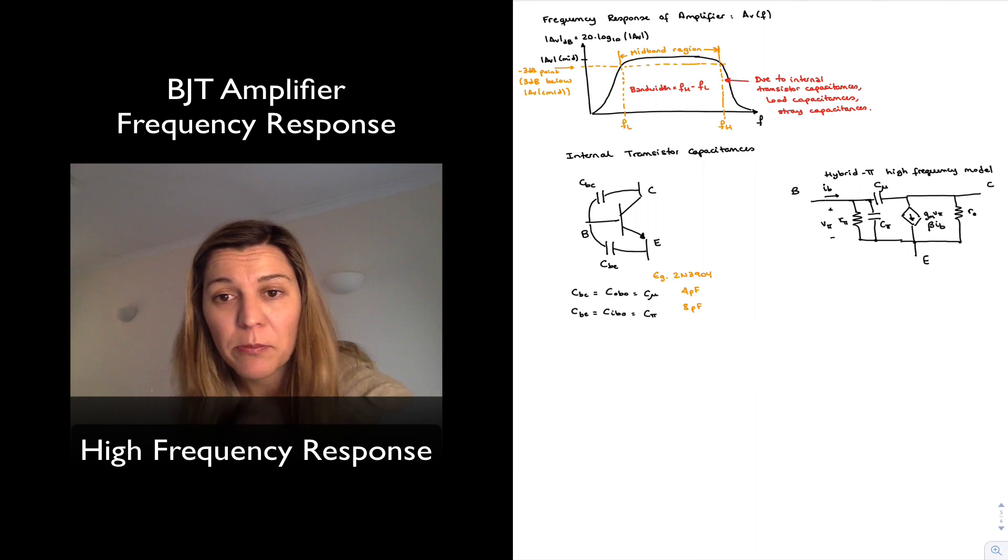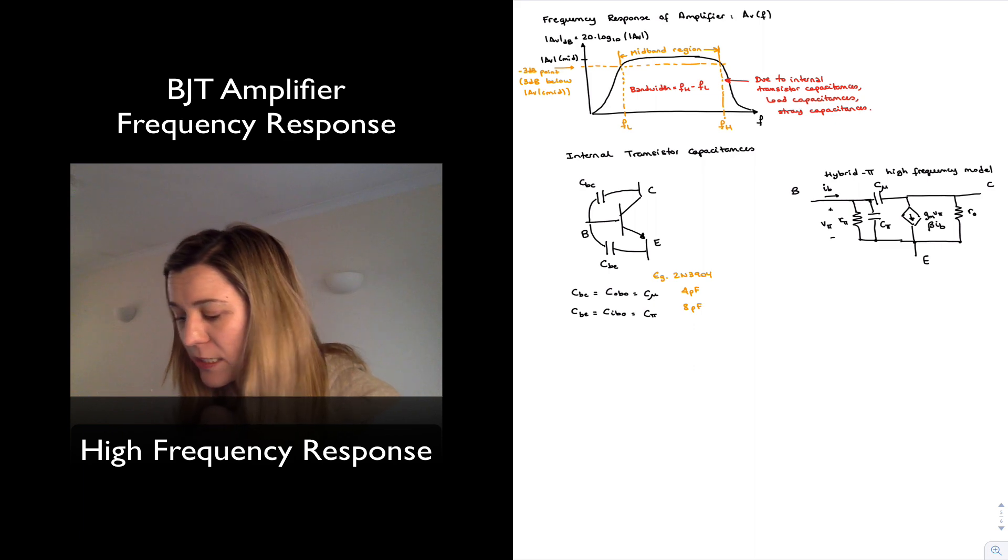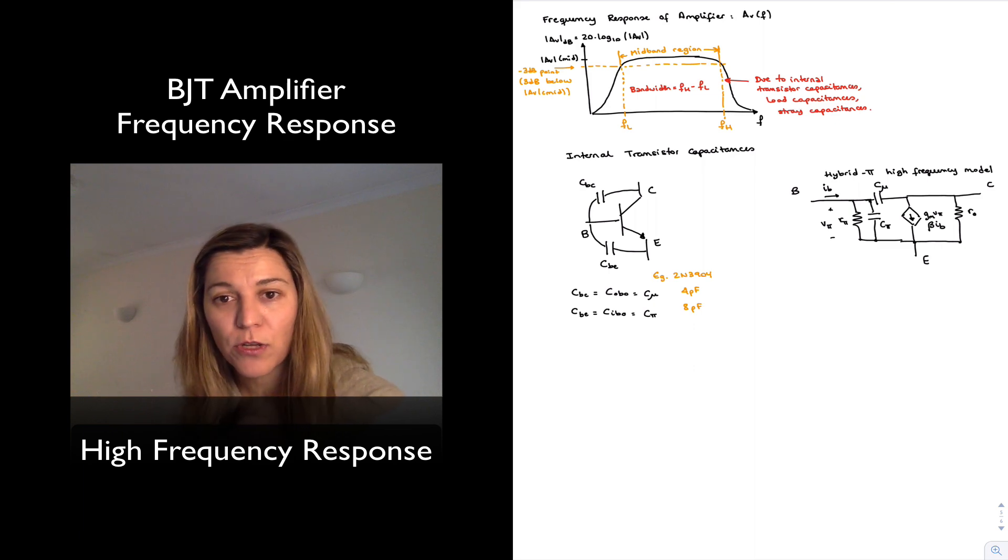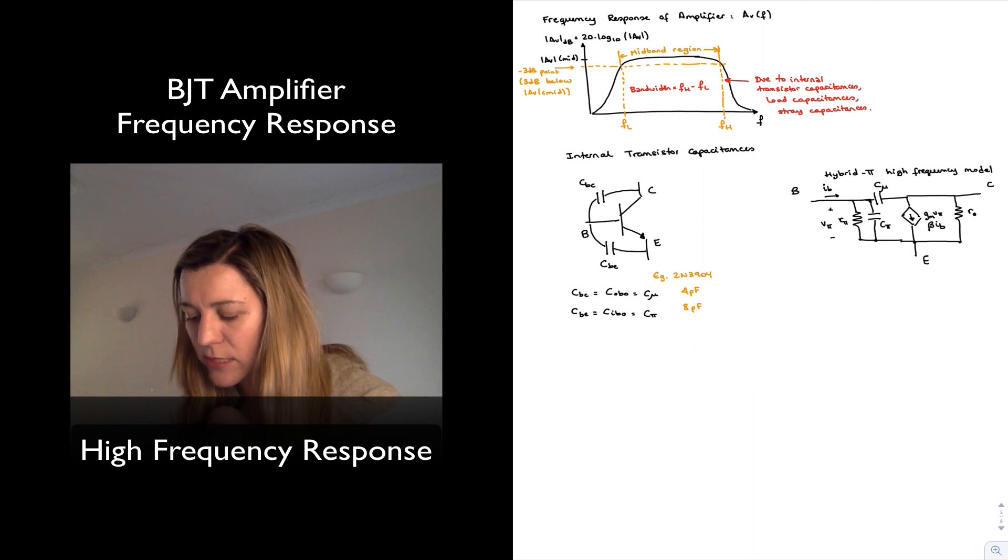We're just going to be using this simpler approximation. The reason for that is that those resistors are typically very small, so they're not going to dominate the high frequency response of our amplifiers. So we'll just leave it like this, just considering those two internal capacitances. And we'll see how to deal with them.